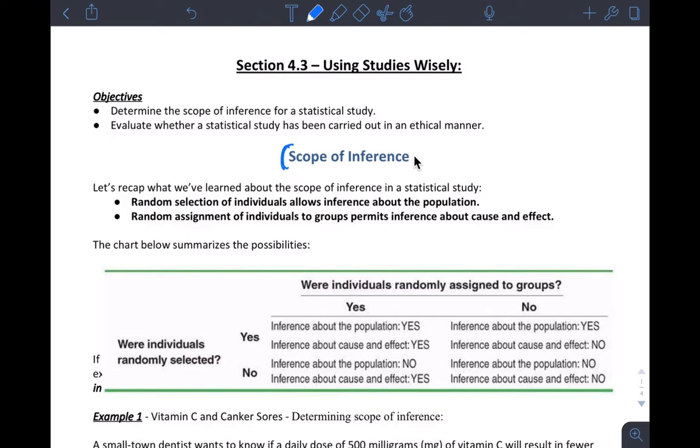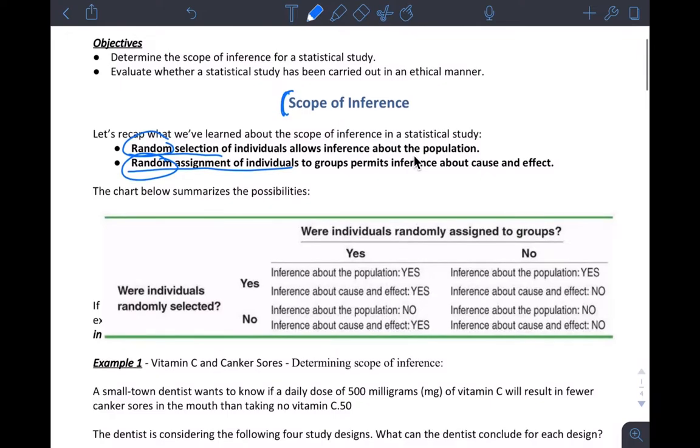And so we learned that for observational studies we want to use random selection to get our samples, and for experiments we want to use random assignment to groups to eliminate bias. Both of these techniques eliminate bias from our study. And so this table here is a good summary of the different combinations of things that can happen in your study.